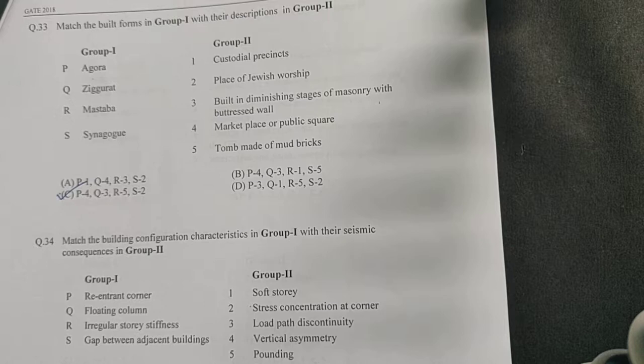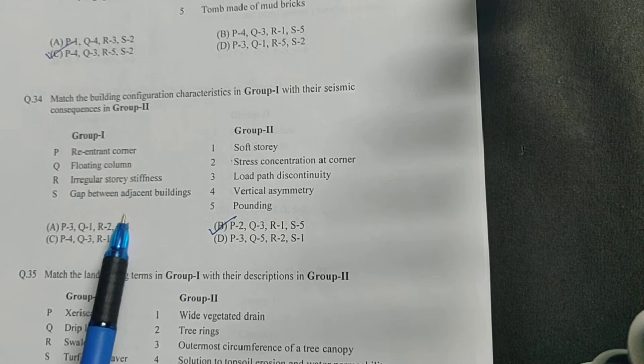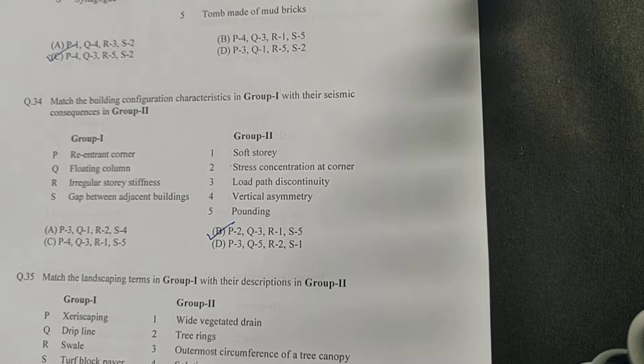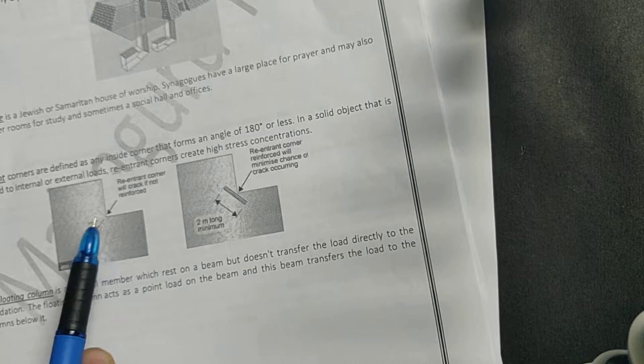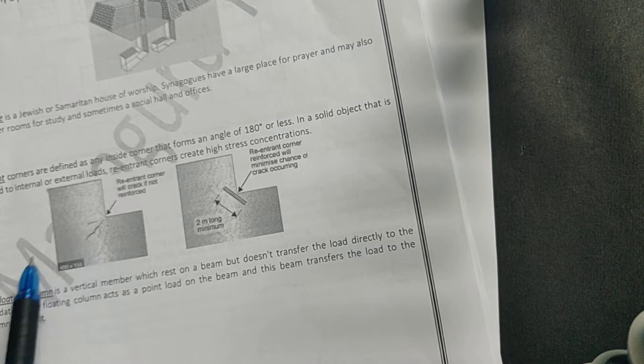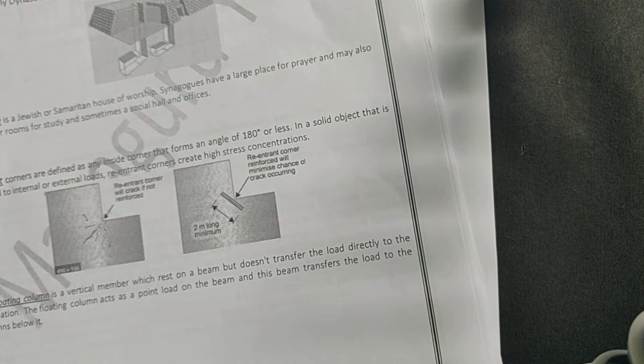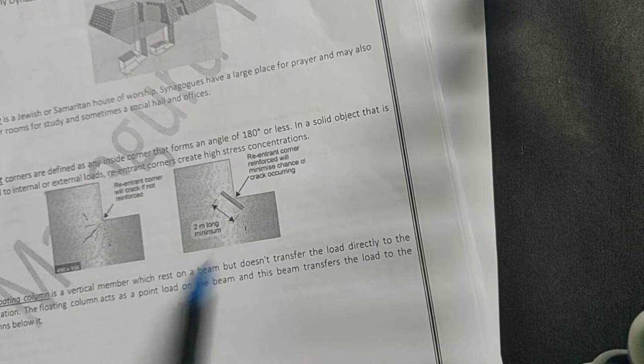Next question, you have some building configuration characteristics and what they mean. There's a term re-entrant corner. What does a re-entrant corner mean? You have any corner like this forming an angle from 0 to 180 degrees. There's internal load and load from here. Because of these two loads, there is stress concentration at this point which leads to cracks formed in this direction. To reduce these stresses, two-meter long steel is being reinforced so all the load is taken up by the steel.